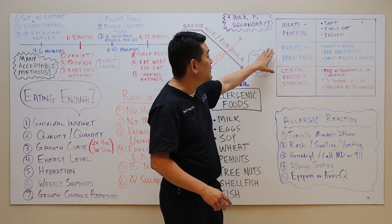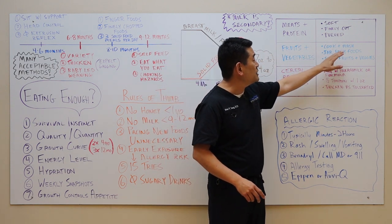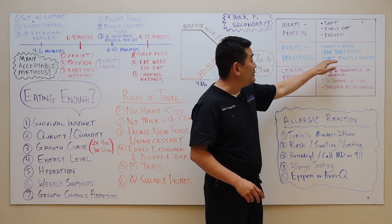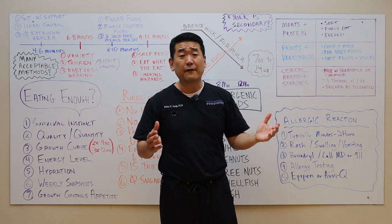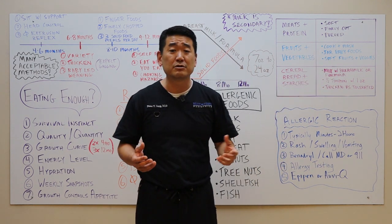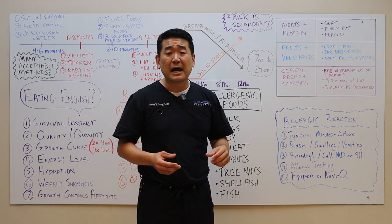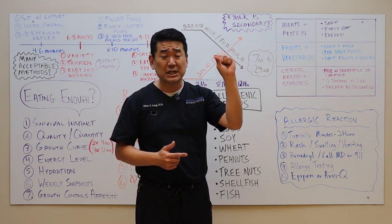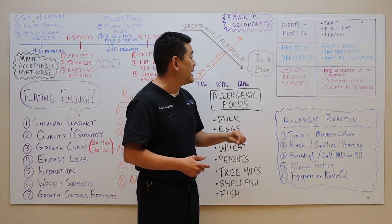Following the meats and proteins, you can give them fruits and veggies, which can be cooked and mashed, or you can buy jar of baby foods, or you can give them soft fruits and veggies such as avocados or bananas. Again, things that you can put in between your fingers and you can crush easily with your fingers, they should be able to handle.